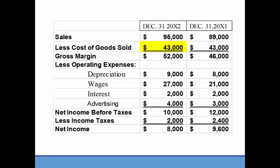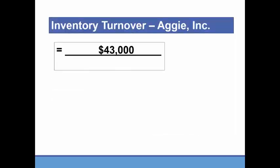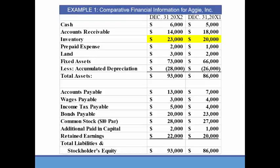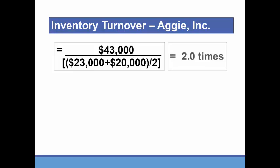Cost of goods sold for 20X2 is $43,000, so we put that in the numerator. Then from the balance sheet, inventory ended at $23,000 and began the year at $20,000. So $23,000 plus $20,000 divided by 2 gives average inventory of $21,500. That gives us inventory turnover of 2 times.